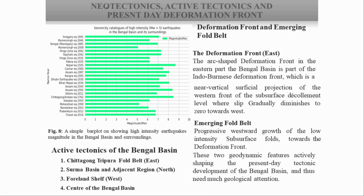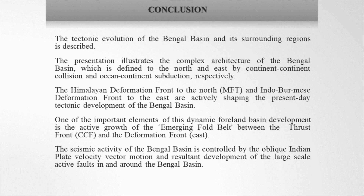To understand whether the Bengal Basin is tectonically active in the present, the answer lies in the deformation front and emerging folds. The deformation front of the Himalayan to the north and Indo-Burman to the east, and notably the active growth of emerging folds between the transpressional fault and the eastern deformation front. The tectonic evolution and features of the Bengal Basin are defined by continent-continent collision to the north and ocean-continent subduction to the east. The seismic activity is controlled by the oblique Indian plate velocity vector motion, resulting in the largest active faults in and around the Bengal Basin.